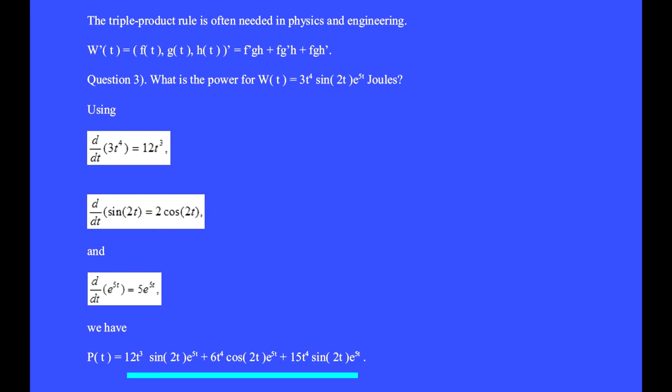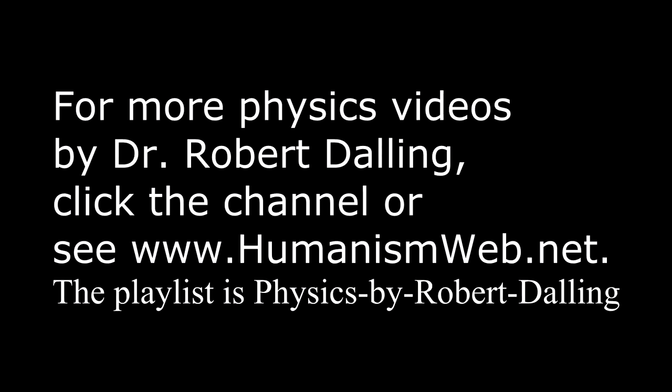We have P(t) = 12t³ sin(2t) e^(5t) + 6t⁴ cos(2t) e^(5t) + 15t⁴ sin(2t) e^(5t). Please show that this is the power. Thank you.